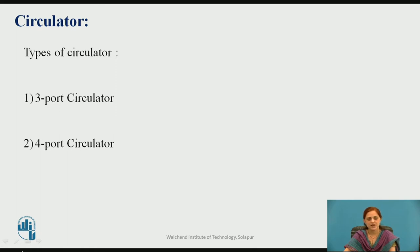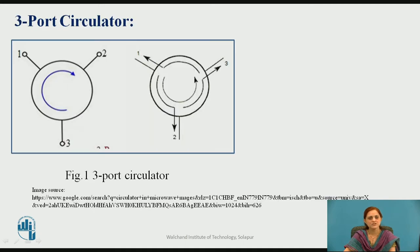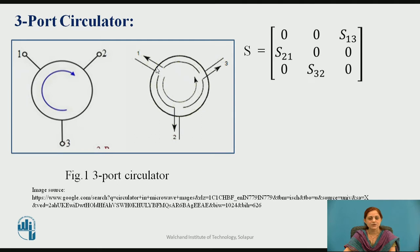The types are the 3-port circulator and 4-port circulator. In the 3-port circulator, there are 3 ports as shown: port 1, port 2, and port 3. Port 1 is coupled to port 2, and port 2 is coupled to port 3. If the input is applied to port 1, the output is taken from port 2, whereas port 1 and port 3 are isolated from each other. The scattering matrix is of order 3×3, and S13, S21, and S32 are the scattering coefficients.